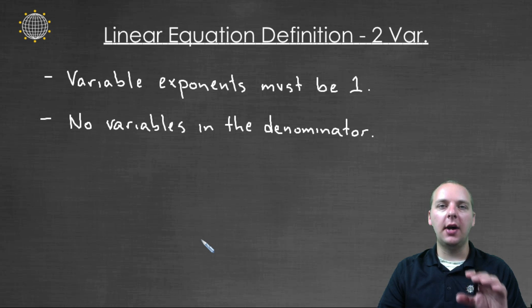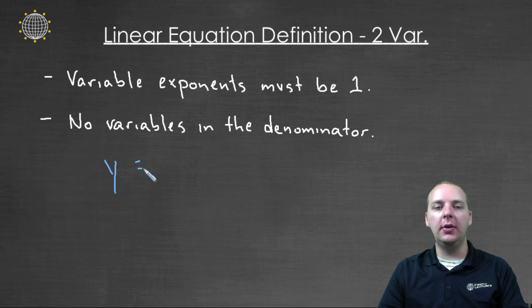The other condition is that you're not allowed to have any variables in a denominator. So, for example, a linear equation in two variables may be y equals four x plus five. So it's an equation. It has x's and y's.